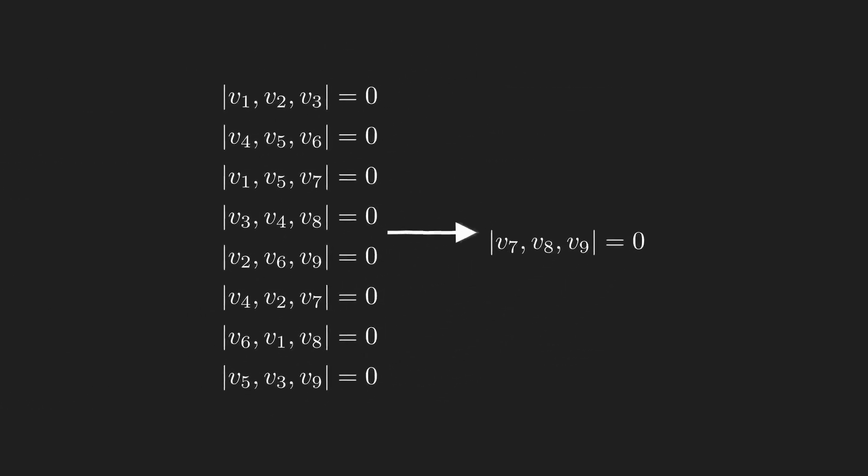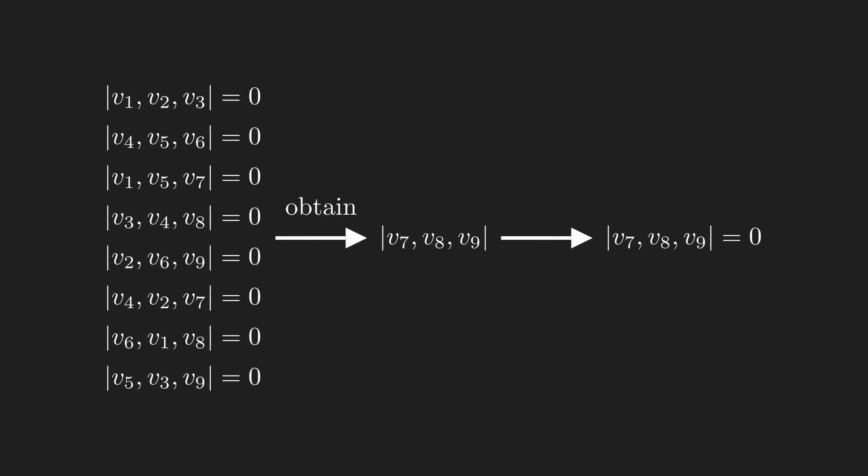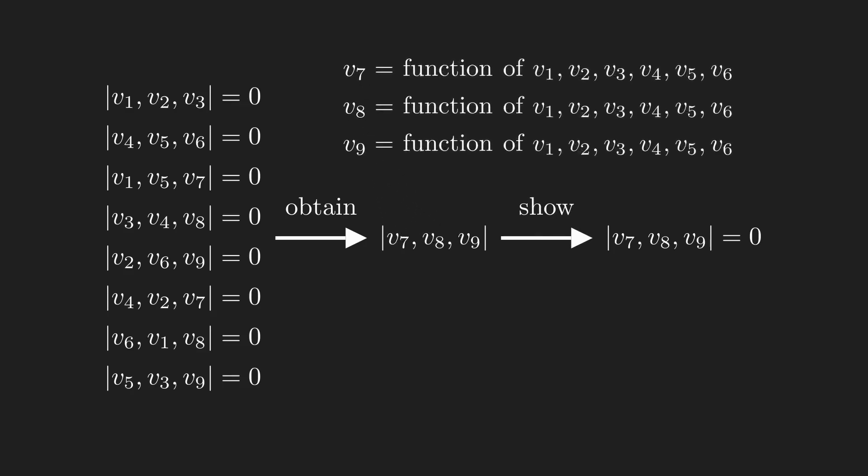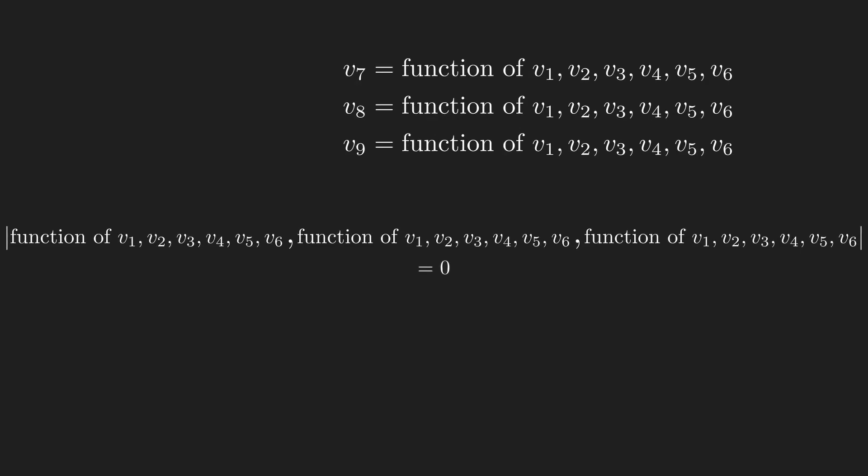I have to show that the ninth equation is true using only the first eight equations. In other words, I have to manipulate the first eight equations to obtain the determinant of vectors 7, 8, and 9, and show that it equals zero. I'll do this by solving for those vectors in terms of vectors 1 through 6, taking the determinant of them, and showing that it equals zero.